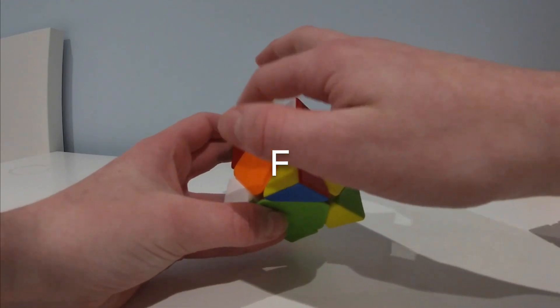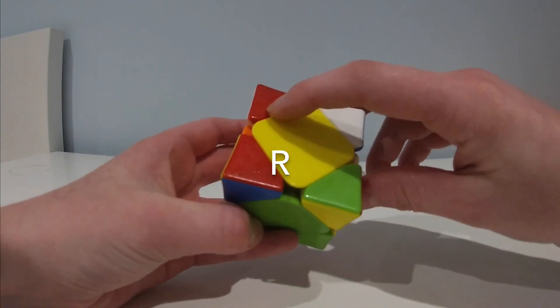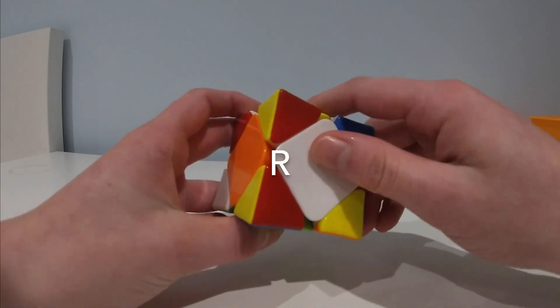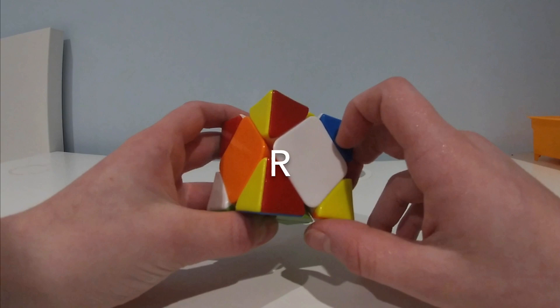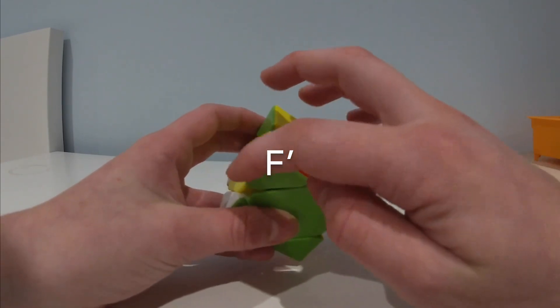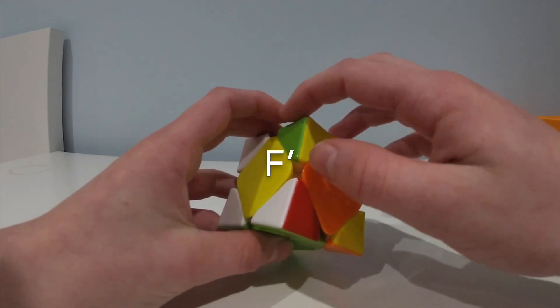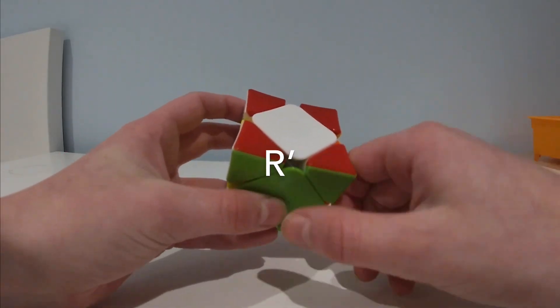So, what you need to do here is you've got to do an F. This moves the correct corner out of the way. Then, what you do is you move this corner up, the incorrect corner up, that's an R, and you undo those first two moves. So, you do an F prime. This brings it back into place and it also rotates the corner. And then, you can do an R prime and it brings it back into place.